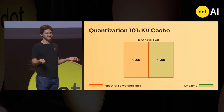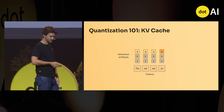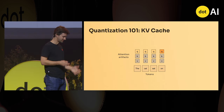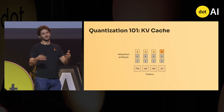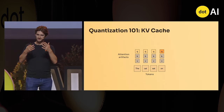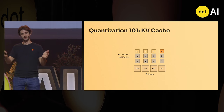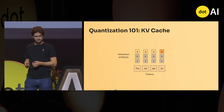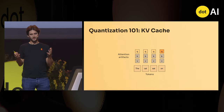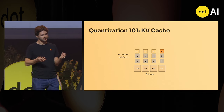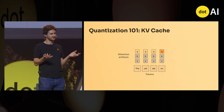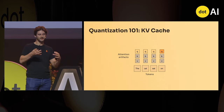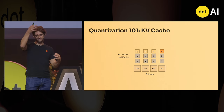But what's the KV cache? As you might know, transformers are autoregressive models — you forward what you've done so far, predict the next token, then the next, then the next. The transformer is made of attention mechanisms, with one attention layer per transformer layer, stacked on top of each other.